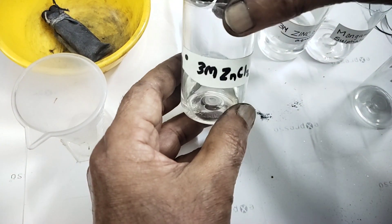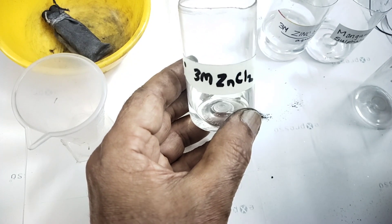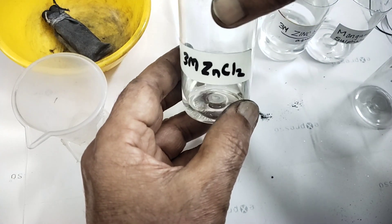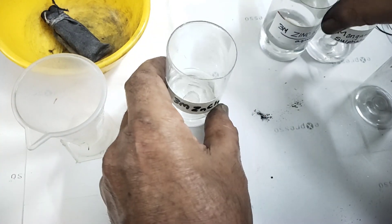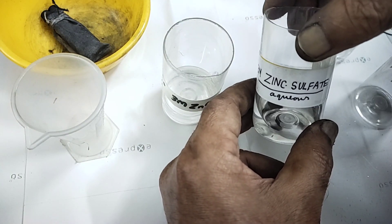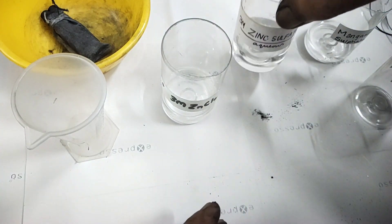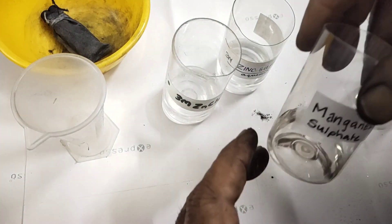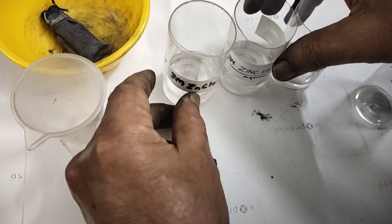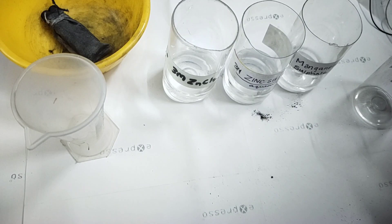The electrolyte here I have already taken, weighed. This is 10 grams of zinc chloride in 25 ml of distilled water, this is 3 molar zinc chloride. This is also 3 molar zinc sulphate, this is also 10 grams in 20 ml of distilled water zinc sulphate. Similarly, 0.15 gram manganese sulphate dissolved in 10 ml of water, all this I kept ready so that I can make it fast for you.